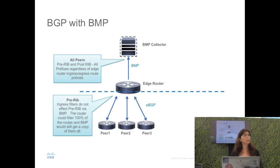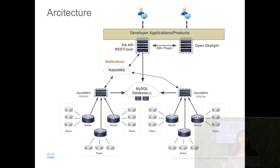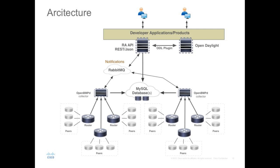You also have access to pre-policy or pre-RIB data — before the policy, you had these many prefixes coming to you — and we also know the prefixes after the policy. That opens the door to evaluate how efficient your policies are: is this what you really expected the router to filter? The overall architecture has routers and peers in the network, a distributed collector Open BMPD, distributed MySQL databases, and applications interacting through a REST API or plugin.